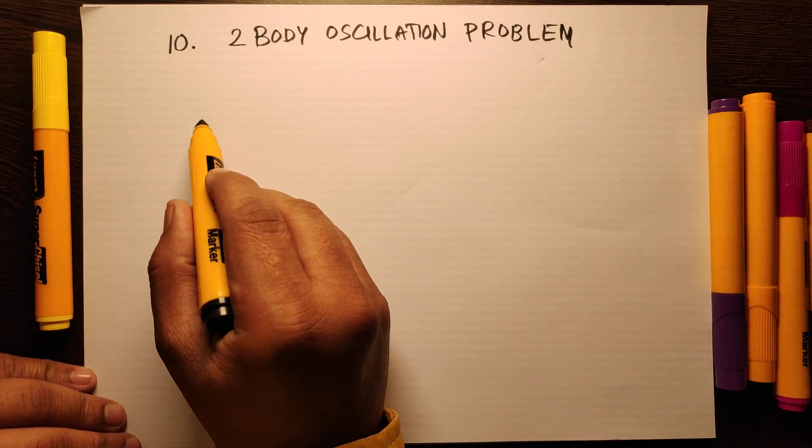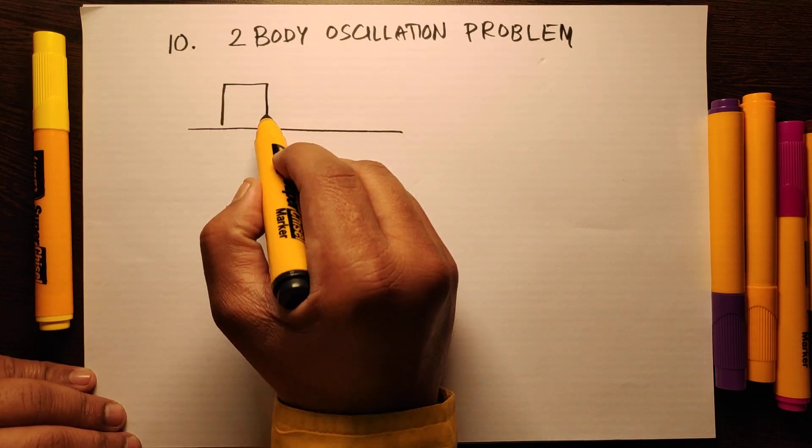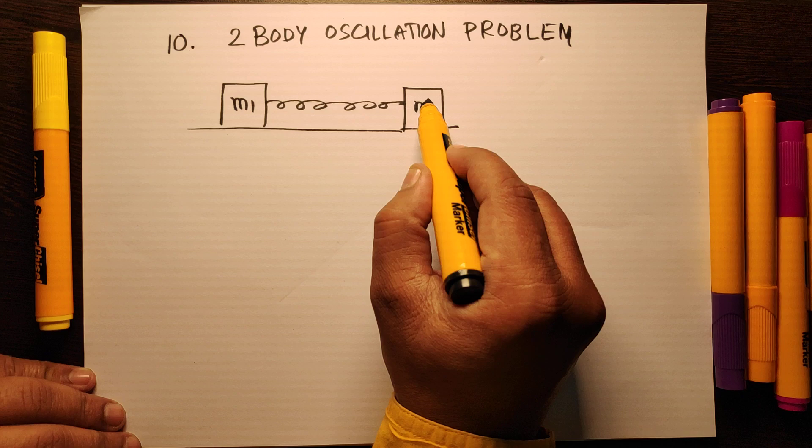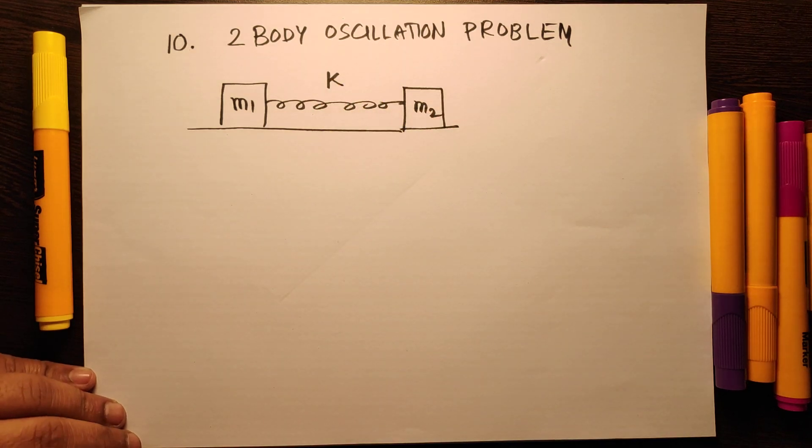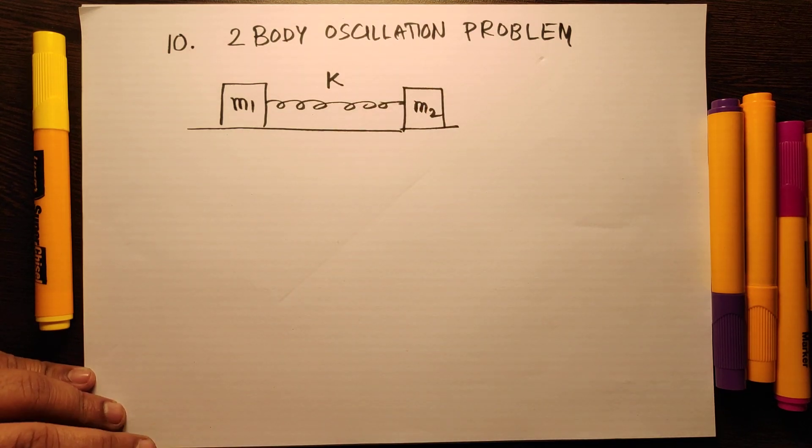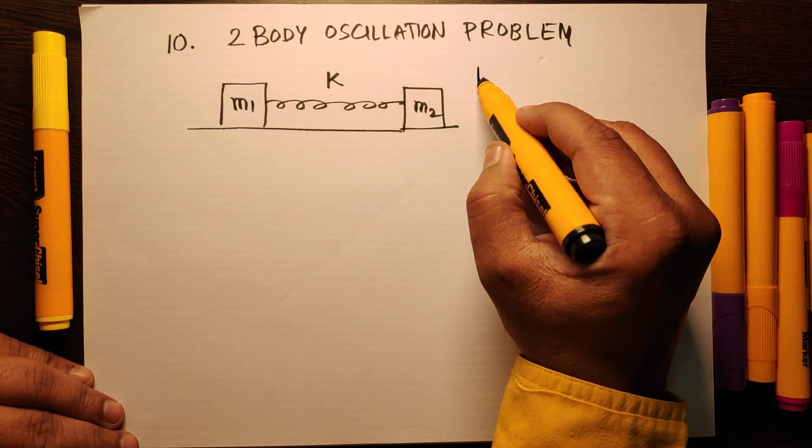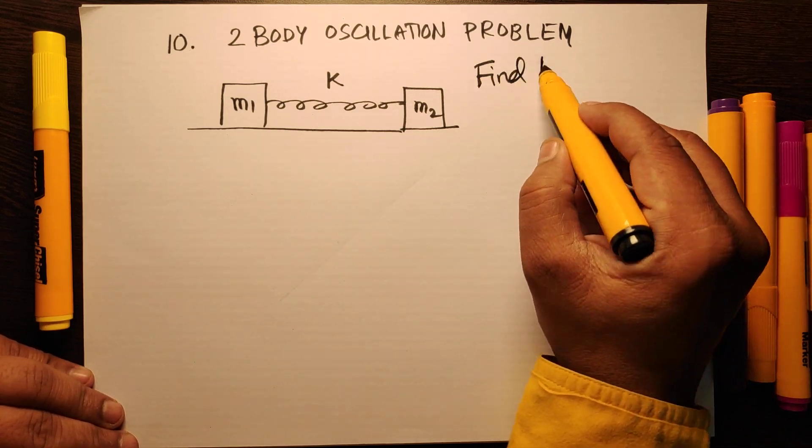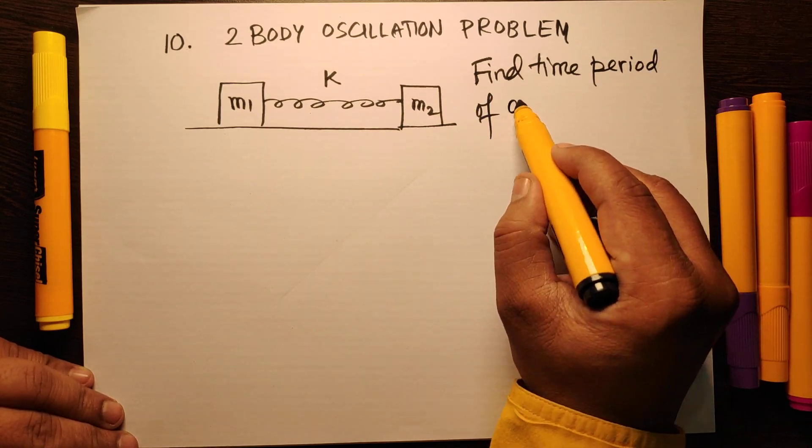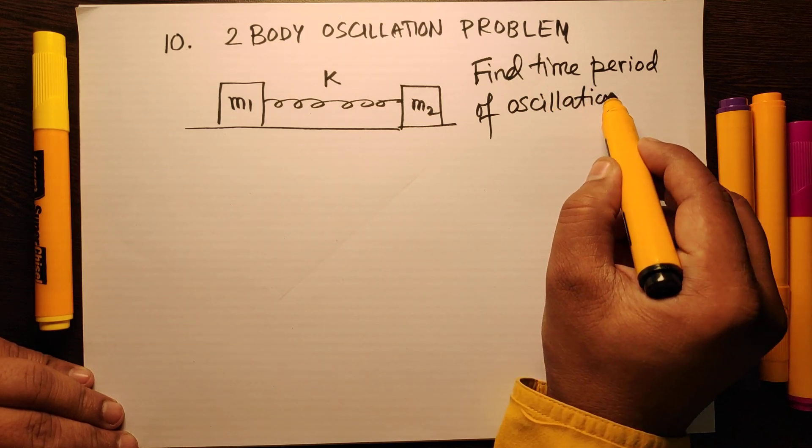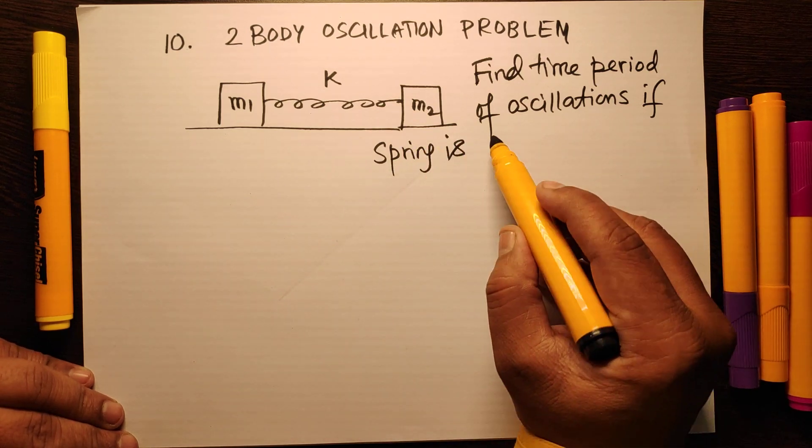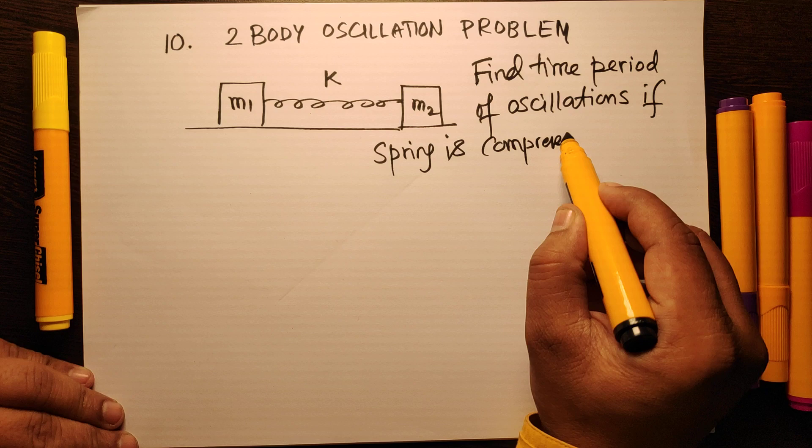Here it is given that on a smooth surface there are two blocks m1 and m2 joined by a massless spring of force constant k. The spring is slightly stressed and released, or slightly compressed and released. You have to find the time period of oscillations if the spring is compressed or stretched.